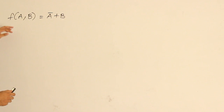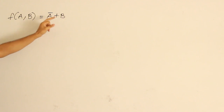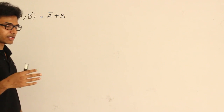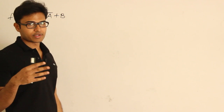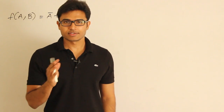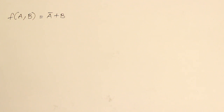Let's see if this function is functionally complete or not. f(a, b) = a' + b, which is also nothing but a implies b. Later in discrete mathematics and propositional calculus I will show that it equals a implies b. For now, I want to prove that it is functionally complete.